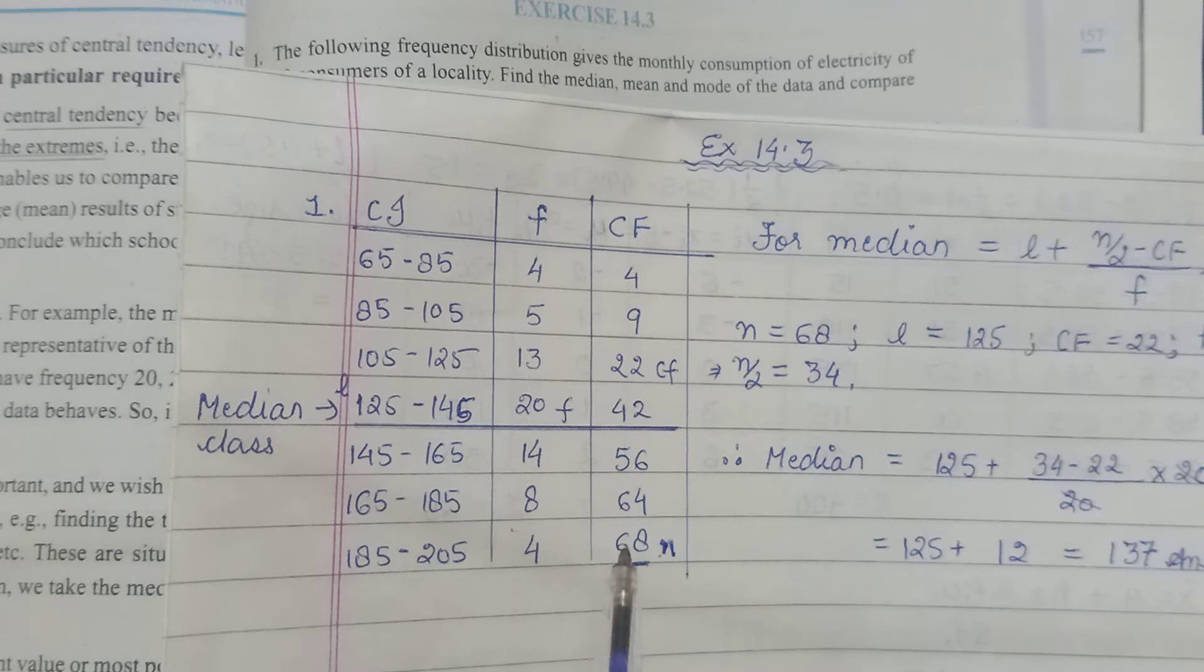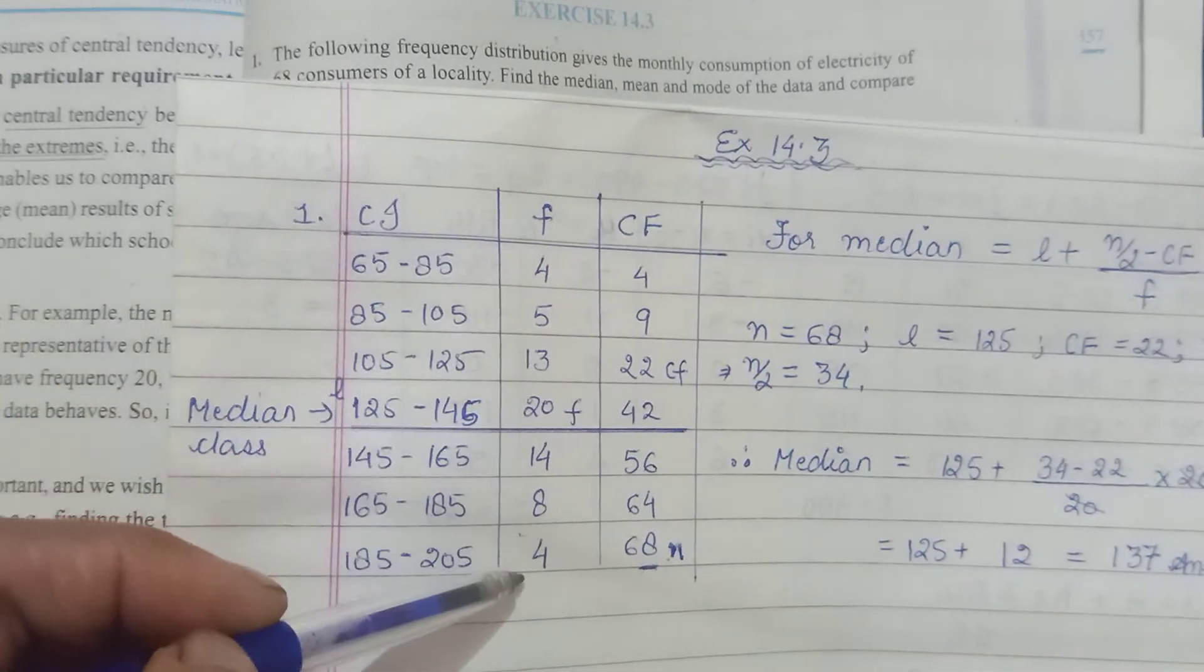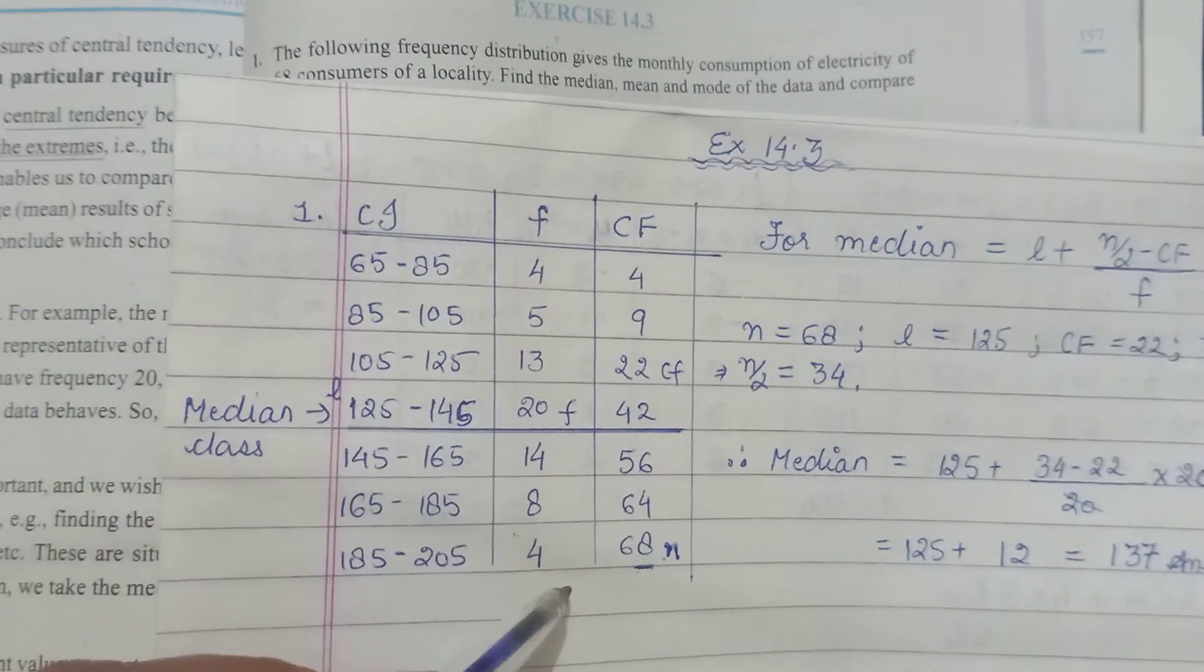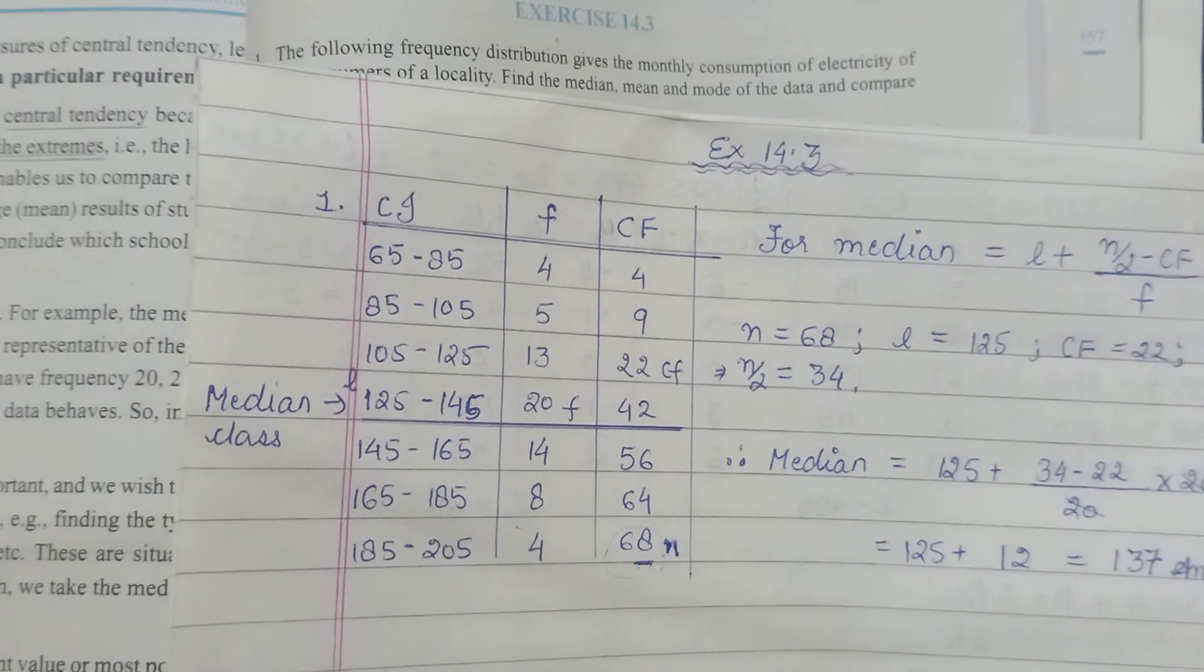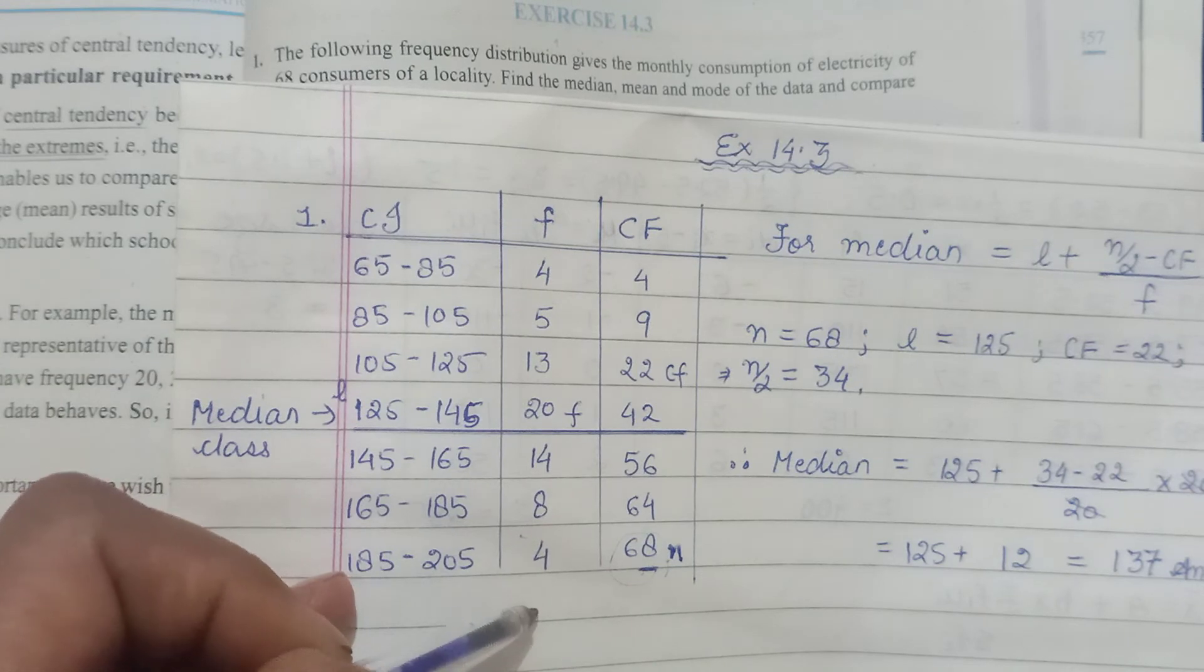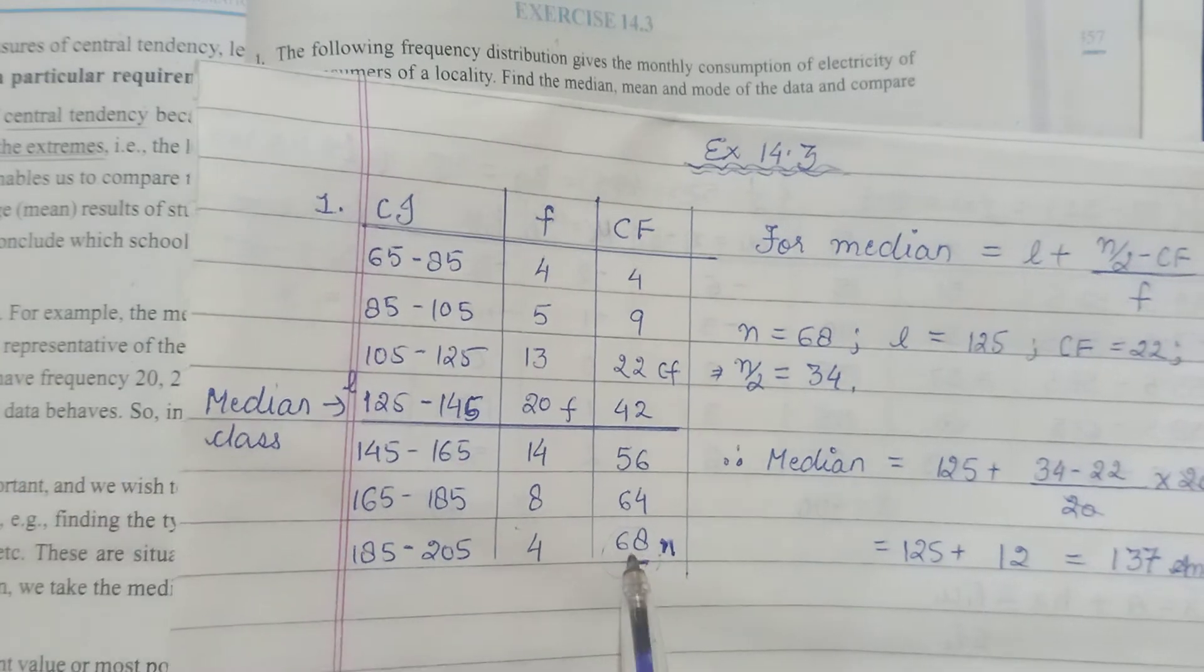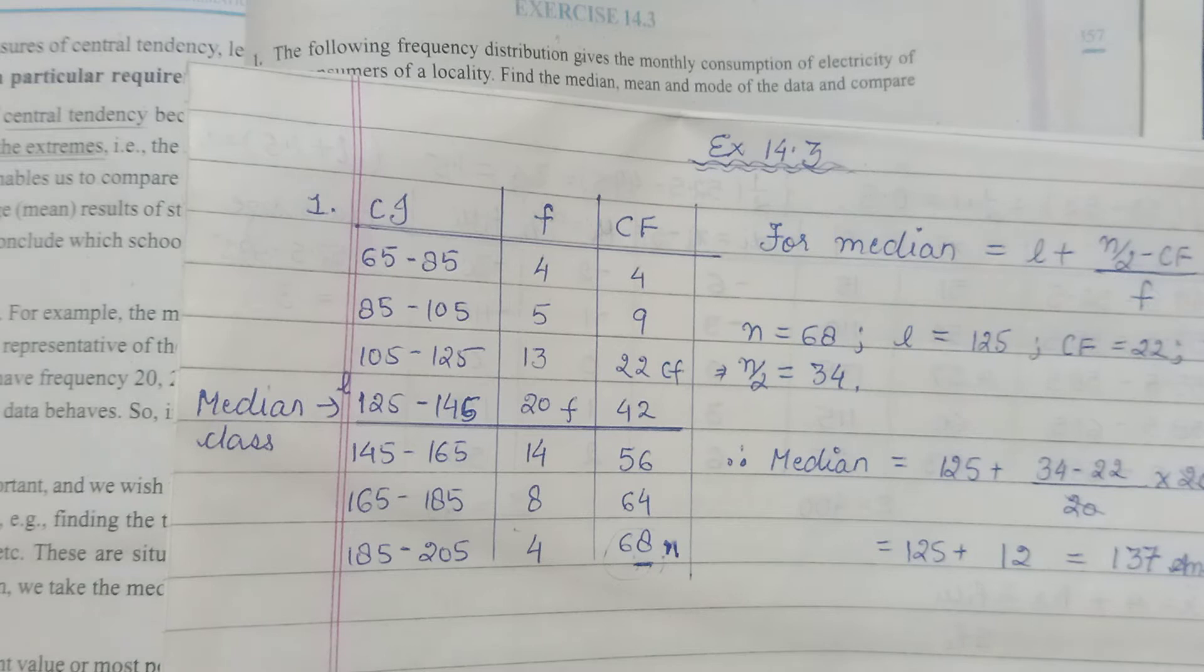It should come equal to n. Like if I say if the question mentions that there were 68 people. The last entry out here, this, or sigma f agar aap karoge, sigma f will be equal to the last entry in CF because CF meh hum kar kya rahe hai - hum frequencies ko add up kar rahe hai, we are accumulating it.